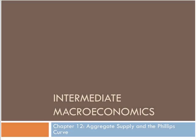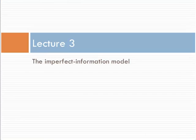We're continuing with Chapter 12, Lecture 3. In Lecture 3, we're going to take a different view of the short-run aggregate supply curve. We're going to get something very similar to what we saw with the sticky price model, but approached a little differently. It's called the imperfect information model.